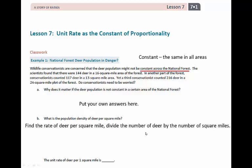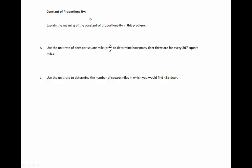We'll do each of the three different measurements individually. First, 144 divided by 16 square miles is 9. Now we divide 117 by 13 square miles — we get 9 again. And 216 deer in a 24 square mile plot is also 9 deer per square mile. Each of these have the same value of the ratio; they are constant. That means the constant of proportionality is 9. We can say the unit rate of deer per one square mile is 9, and the constant of proportionality is 9. We usually say k equals 9 — k is the letter we use for the constant of proportionality in math.